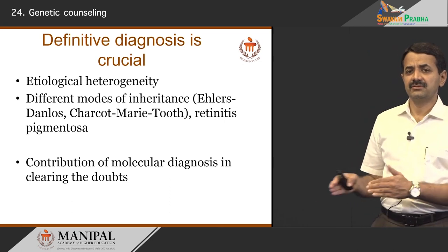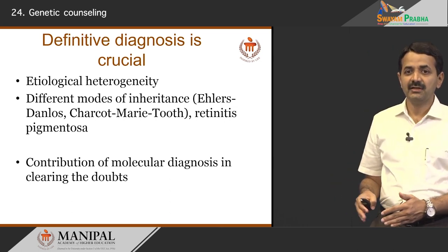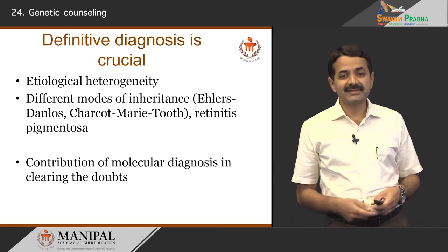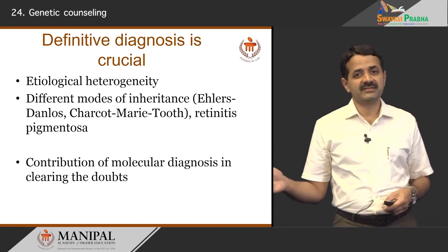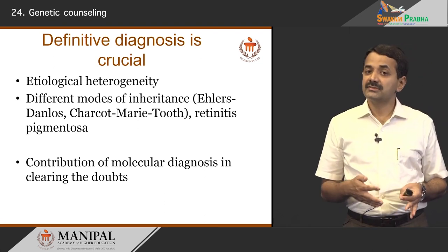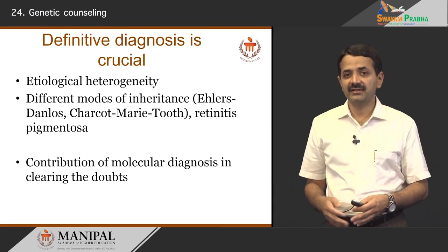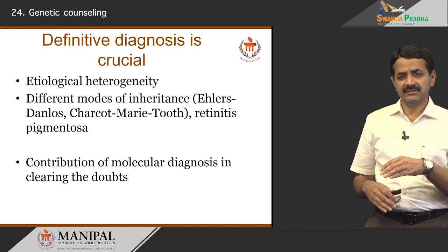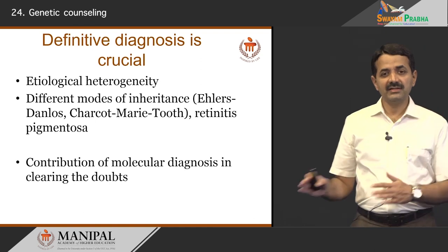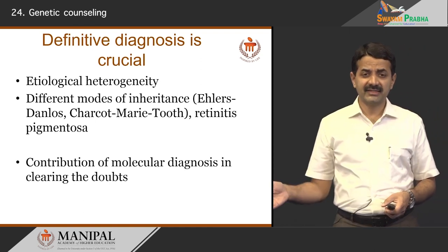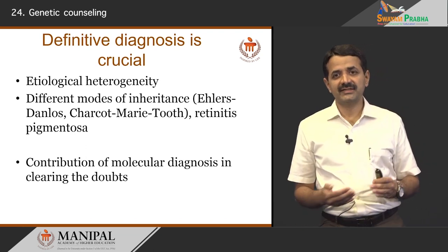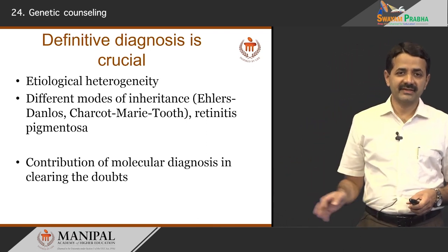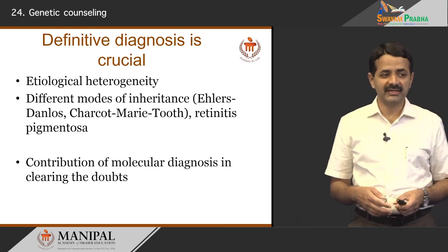We need to appreciate that diseases which appear the same may be etiologically very heterogeneous — they may not be genetic, or even for deafness there are at least 40 or more genes which cause deafness. You really do not know which one is involved, whether it is autosomal dominant, autosomal recessive, X-linked, or mitochondrial — so the counselling and testing would differ. Even for diseases like Ehlers-Danlos syndrome, Charcot-Marie-Tooth disease, or retinitis pigmentosa, where some are recessive, some dominant, some X-linked, the risk of recurrence varies. Disease presentation may be the same but the genes are different and we have different modes of inheritance for a given condition. With modern molecular diagnosis, we can clarify which gene is involved and have a clear picture about risk of recurrence, how it can be tested, and how prenatal counselling and testing can be done.